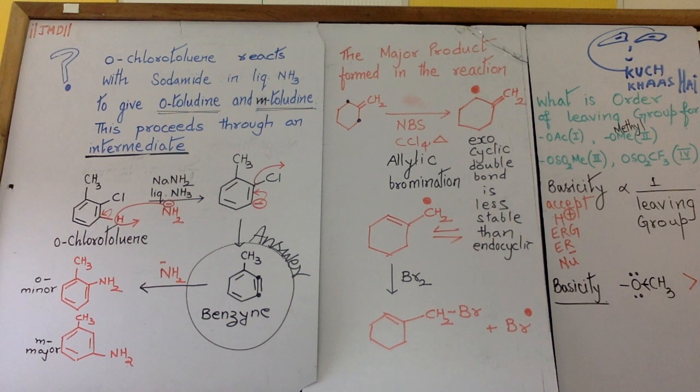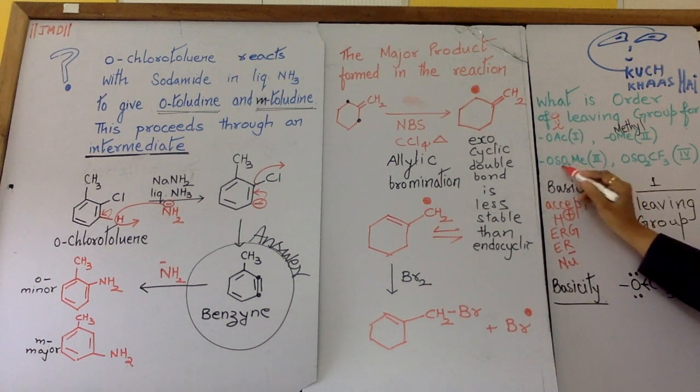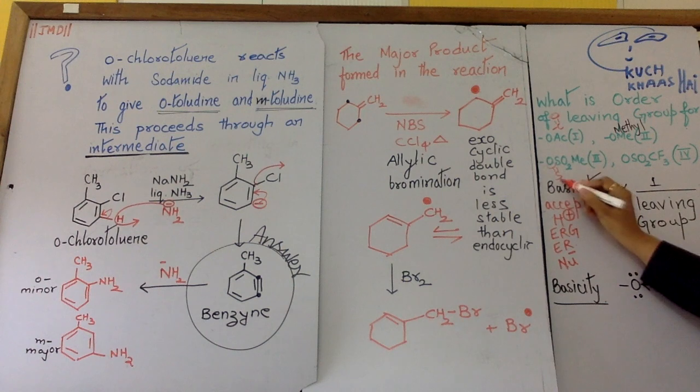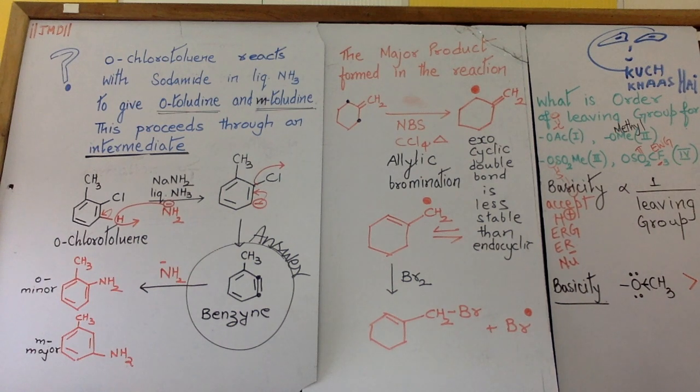Then this is CO pi bond. This is having two pi bonds and this is having the same number of pi bonds plus an EWG. Fluorine is an electron withdrawing group. A withdrawing group is not a good base. An electron withdrawing group is not having good basicity. So this will be last.